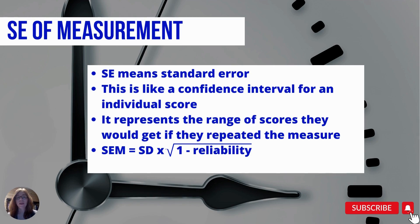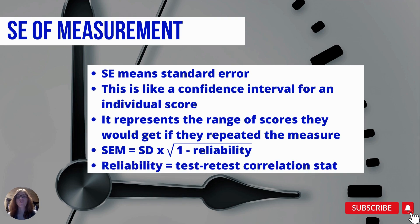The reliability is a correlation of test and retest. So if you take the test and then take it again, there's a certain correlation. One would be a perfect correlation, and if you plug one into that formula, you end up with zero for your standard error, because one minus one is zero, and anything times zero is zero — so you wouldn't have any error.